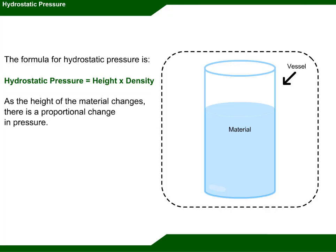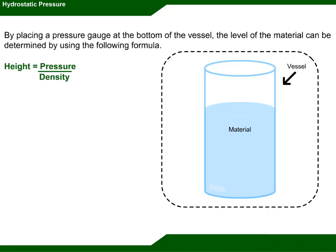As the height of the material changes, there is a proportional change in pressure. By placing a pressure gauge at the bottom of the vessel, the level of the material can be determined by using the following formula: height equals pressure divided by density.